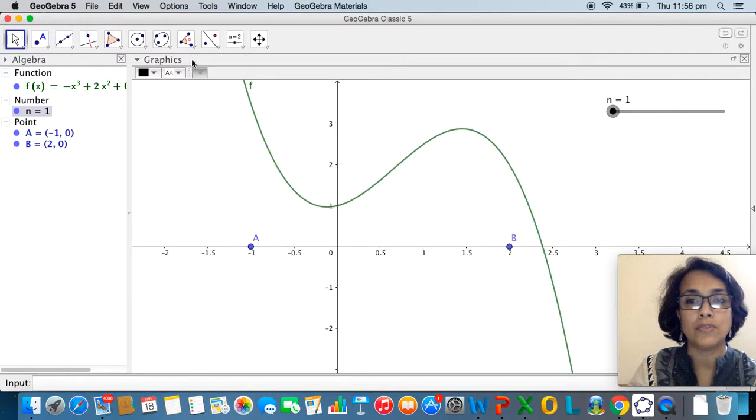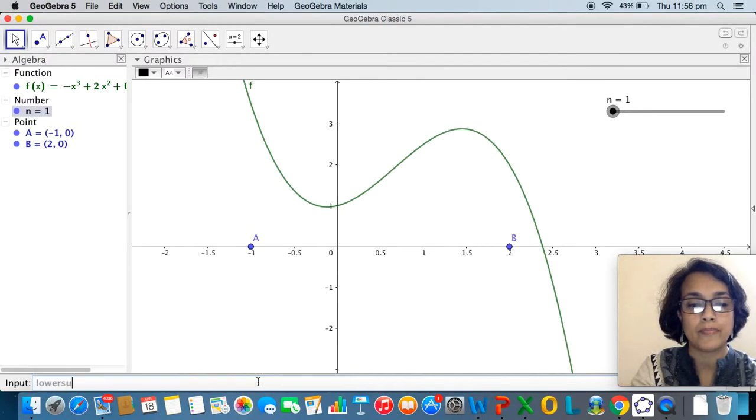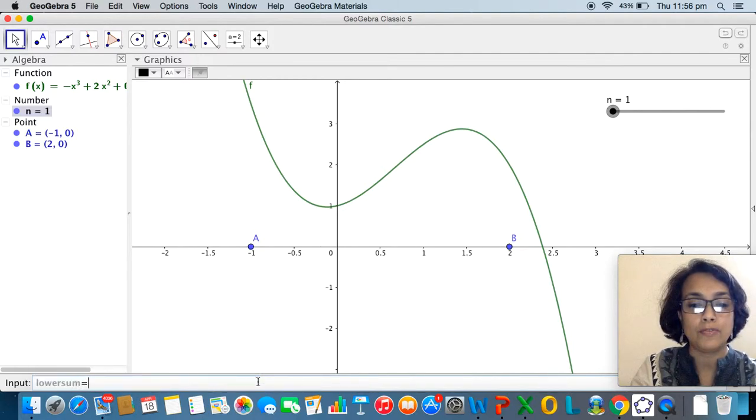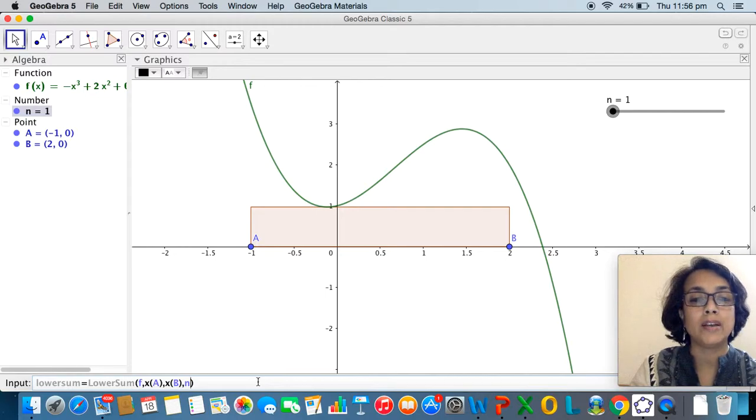Once this is done I can close this window and now I'm going to enter what is called the lower sum function. I'm going to use the lower sum command. What is it that I wish to have the lower sum of? It is of the function f as x ranges from minus 1 to 2. So I'm going to type x of a comma x of b comma n because n will define the number of rectangles.